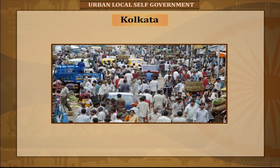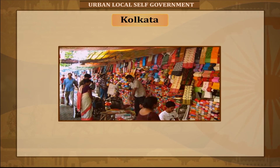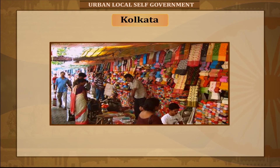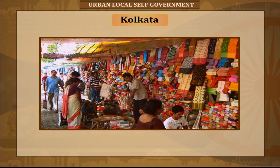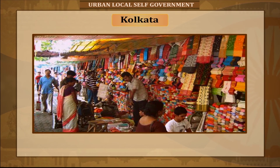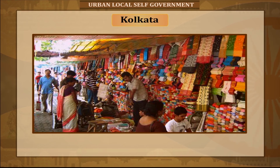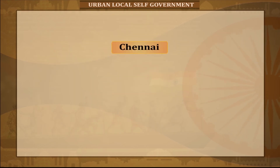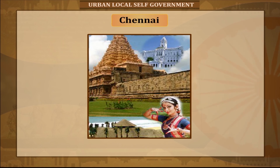In 2011, the city had a population of 4.5 million, while the population of the city and its suburbs was 14.1 million, making it the third most populous metropolitan area in India. In 2008, its gross domestic product adjusted for purchasing power parity was estimated to be 104 US billion dollars, the third largest among Indian cities, behind Mumbai and Delhi.